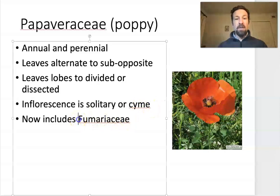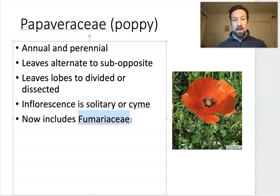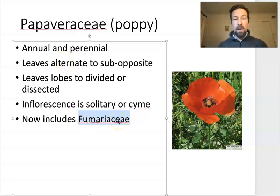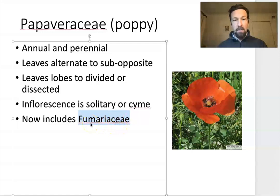The Papaveraceae family is now circumscribed to include Fumariaceae. This is a group that used to be in their own family, but to keep the Papaveraceae monophyletic, we now include members of Fumariaceae in Papaveraceae. This is going to be important for you in laboratory when you're keying out plants, because if you are keying out a plant that is in the old Fumariaceae, then Radford, Allies, and Bell will still have it listed there. You'll have to key it out in Fumariaceae, but when you record the family on your exam, you'll have to specify that the plant is in Papaveraceae.